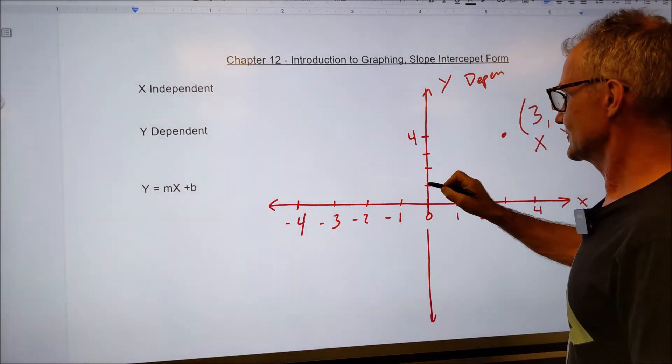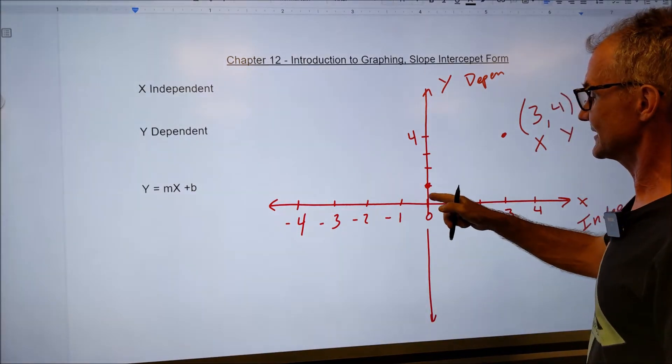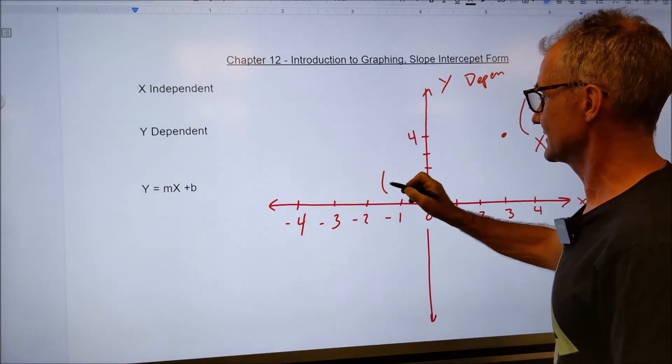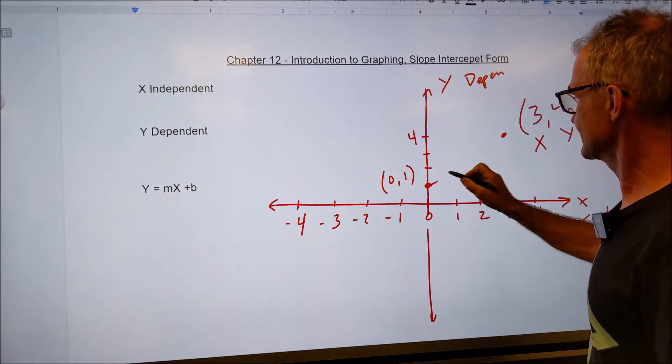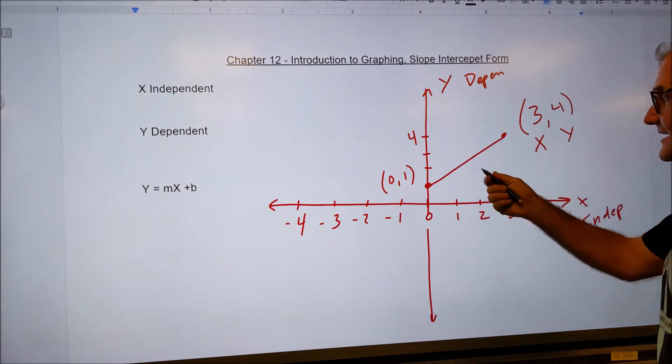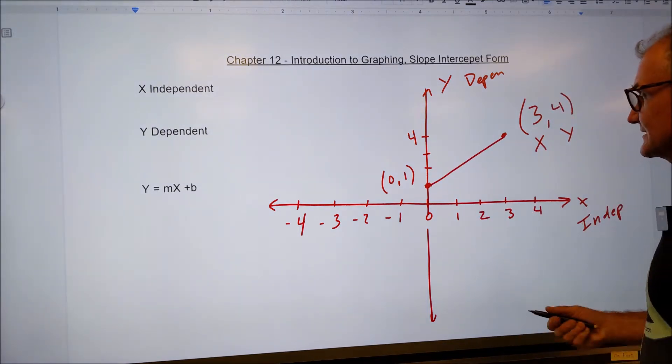From an ordered pair, you go to a second ordered pair. Let's say that value is over zero up one. And then from ordered pairs, you start connecting the dots, figuratively and literally, and you start looking at line segments and lines.